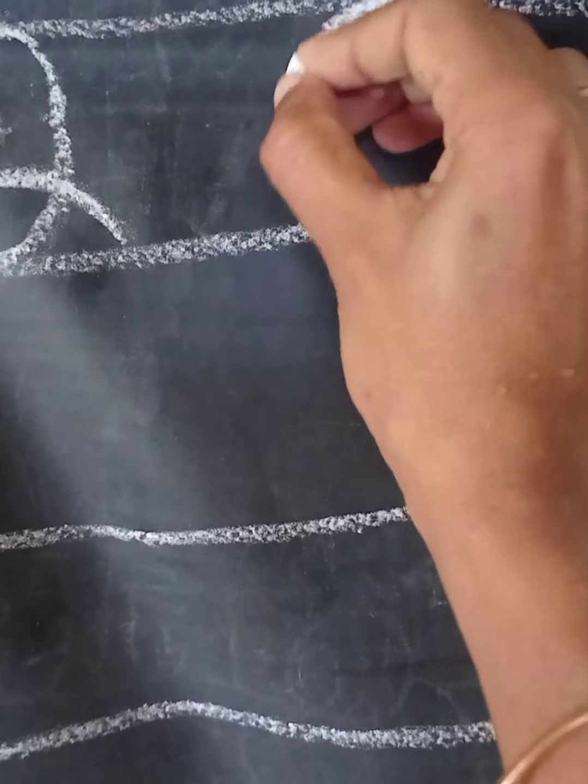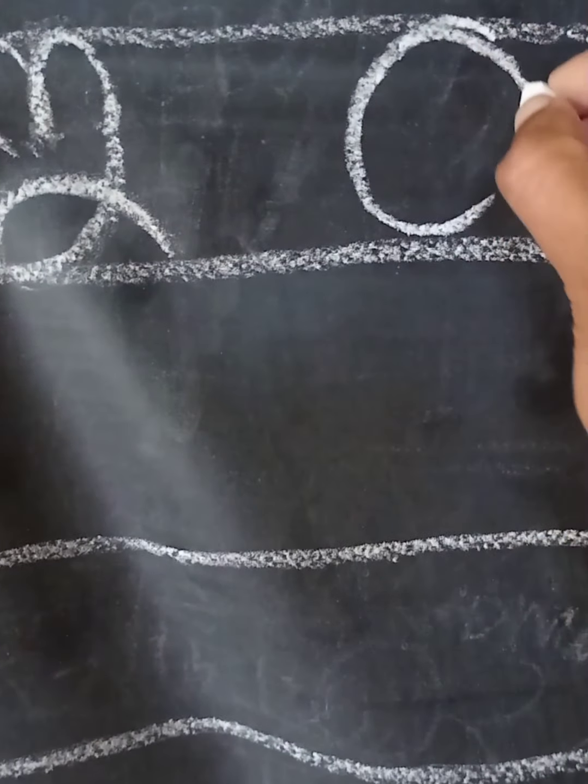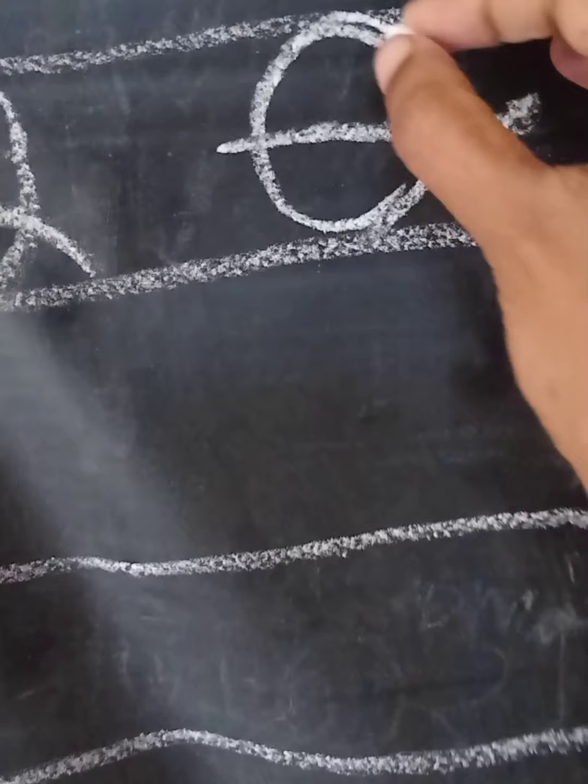The fourth alphabet is E. E as in Echala. Echala means palm tree.